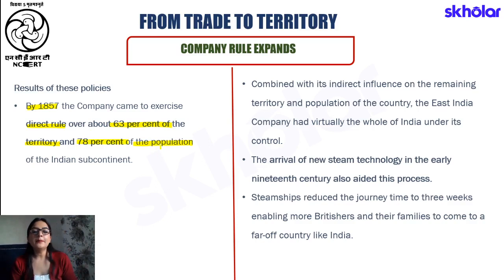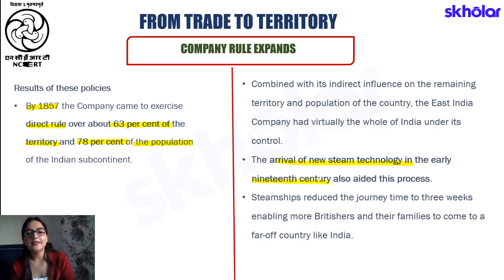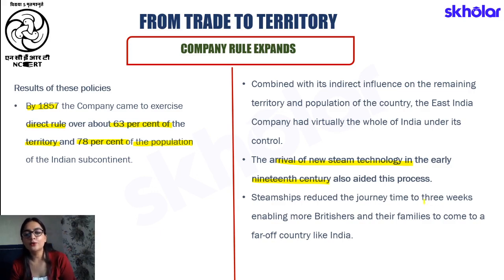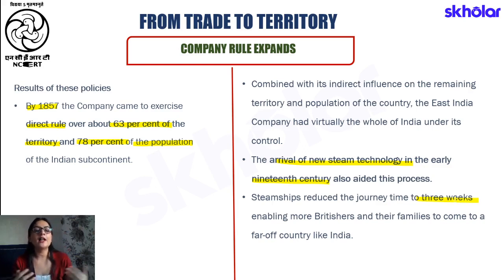In this task, the company was also helped by the arrival of new steam technology in the early 19th century. Earlier, reaching India from normal ships took a very long time — particularly months. However, with the arrival of steam ships, the journey from England to India was reduced to as low as three weeks, and the presence of Britishers along with their families migrating to India became much more prominent.